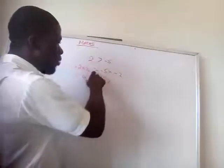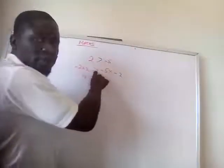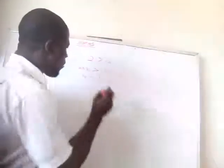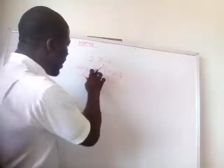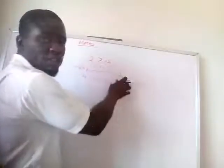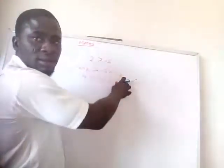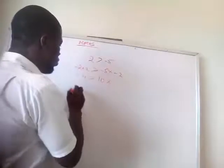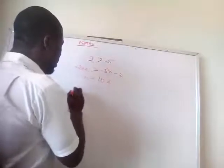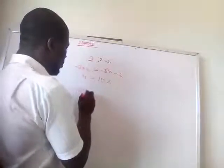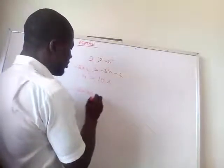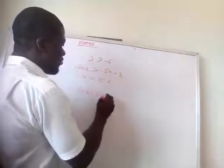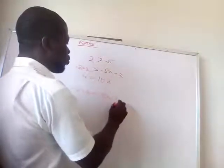At this point now, look at this. We are using 'greater than.' When you reach here, immediately you have multiplied by the negative number, you change the inequality immediately. It's less than minus 5 times minus 2.